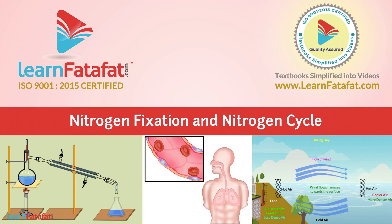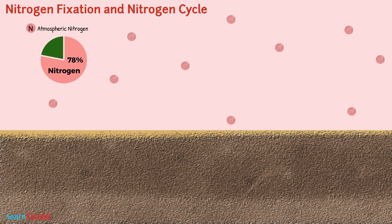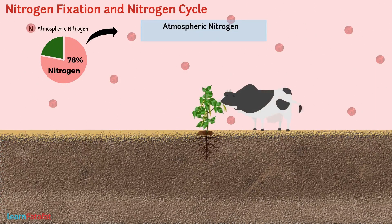Nitrogen fixation and nitrogen cycle. Our atmosphere has about 78% composition of nitrogen gas. It is one of the essential constituents of all living organisms because it is a part of proteins, chlorophyll, nucleic acids, and vitamins.